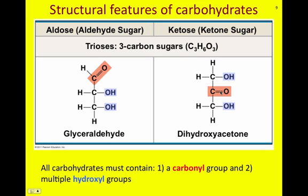In a ketose or ketone sugar, the carbonyl group is in the middle. If you have many carbons present in your sugar, this could be any carbon, but the carbonyl group must be in the middle and not at one of the terminal carbons. Make sure you are able to understand the difference between an aldose and a ketose.